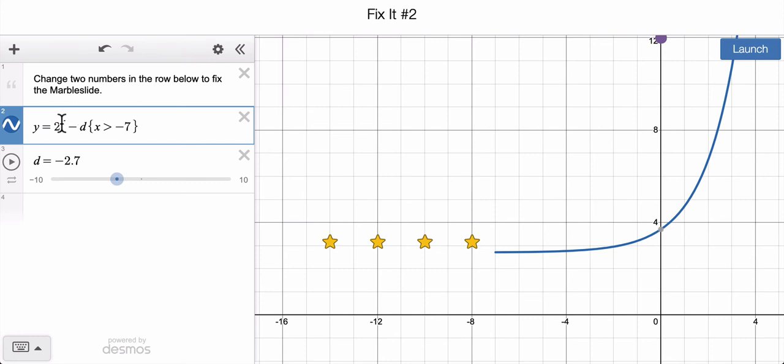Well, it must have something to do with this right here. And what this is called is a domain restriction. It says that x has to be bigger than negative 7.